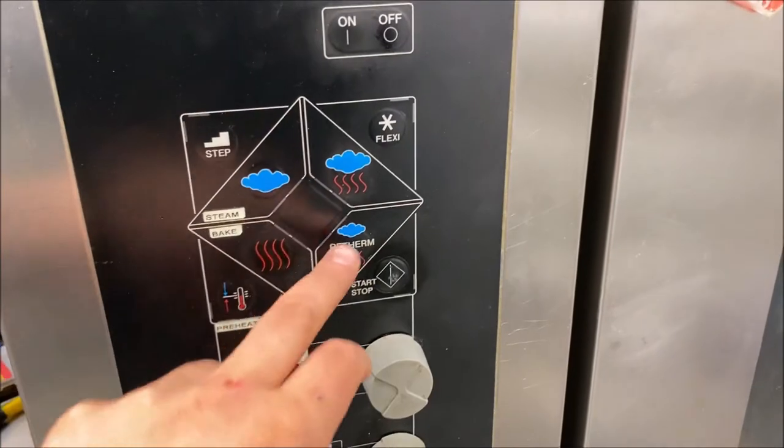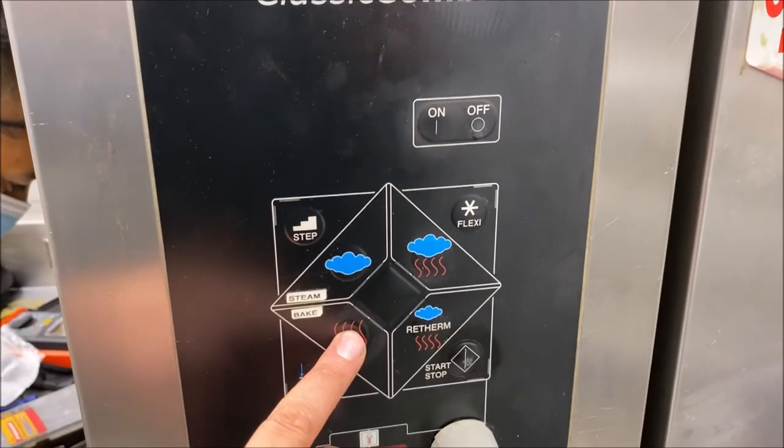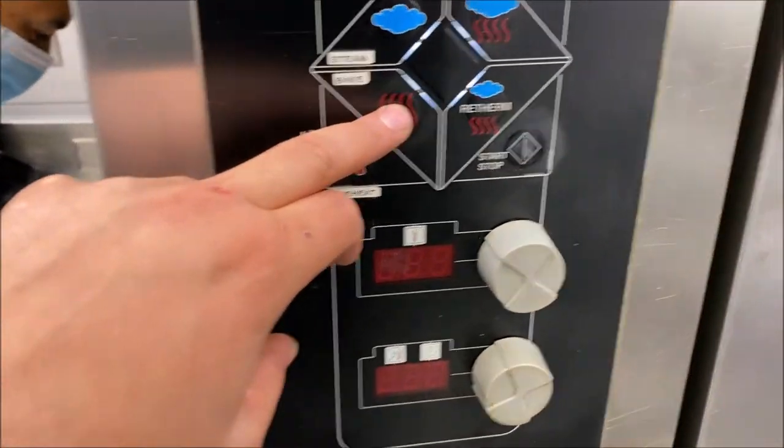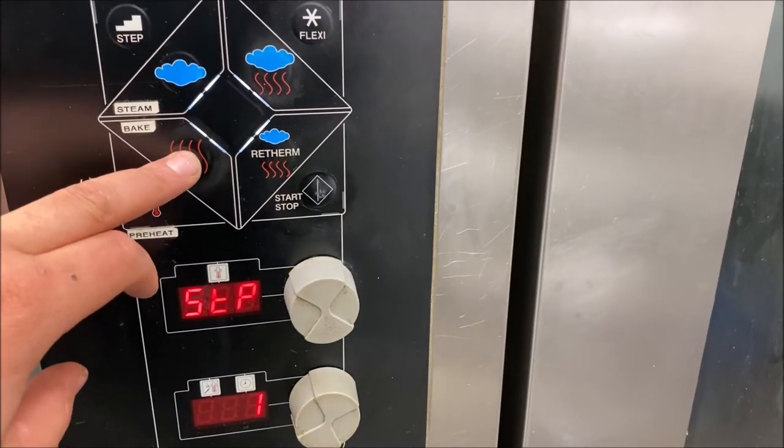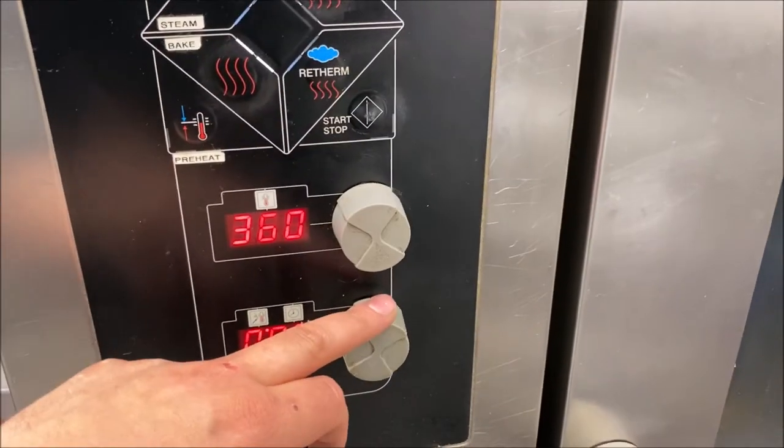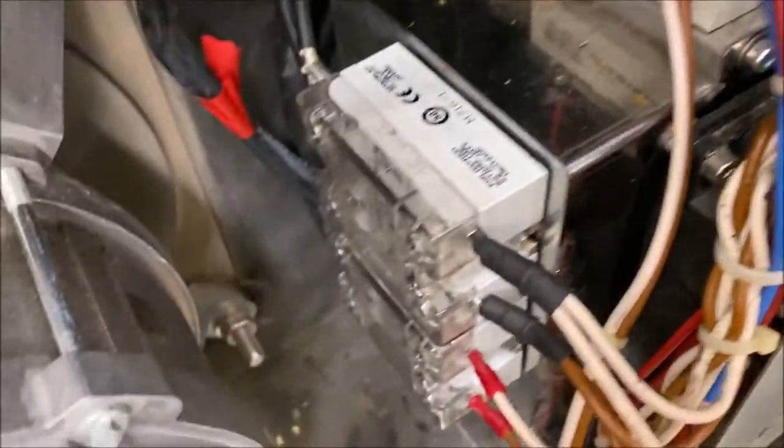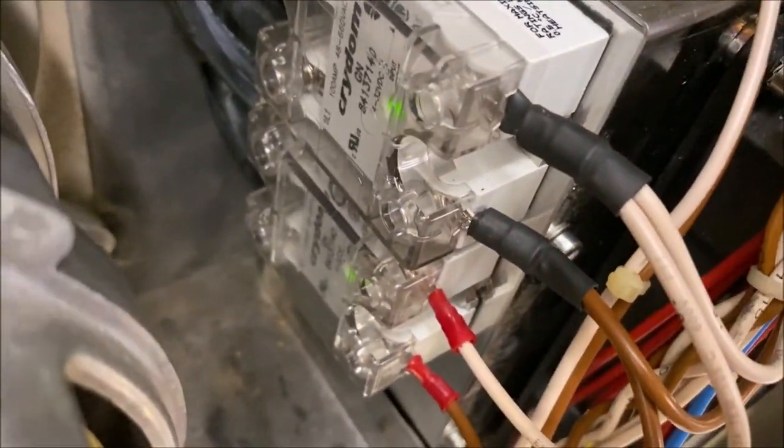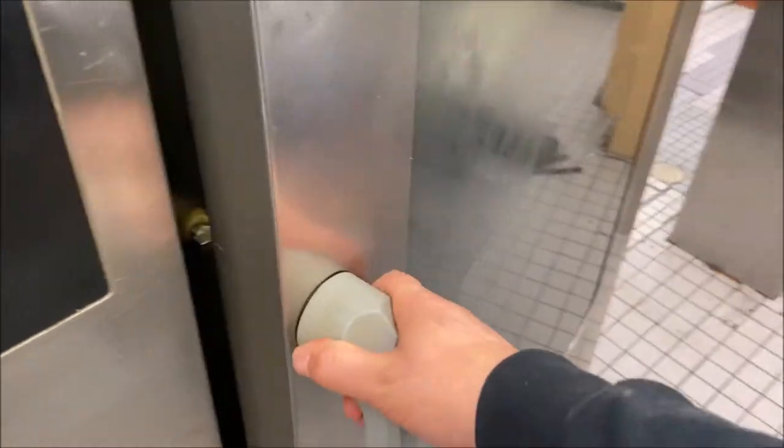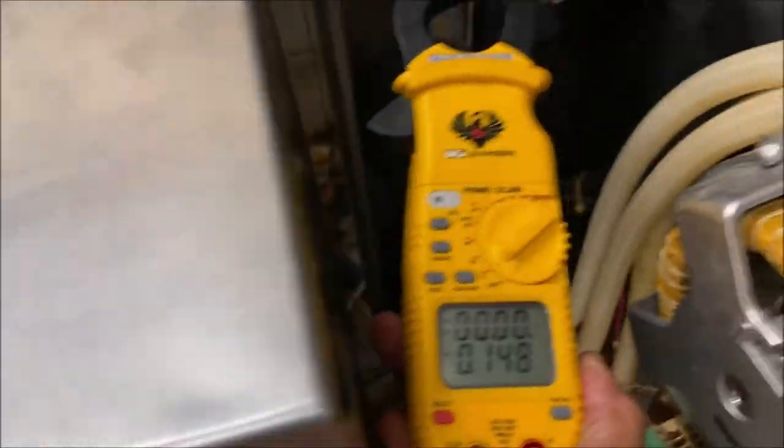Alright, so I'm back on site here. I've changed the element and that second relay, put everything in new. And we're just going to take our amp draws and make sure that none of the relays have failed closed, because I did have that other relay, that left relay I left in. So I just want to make sure that one didn't blow in the interim in the last two days. So we got 24 amps. Open up the door. Zero amps. Perfect.